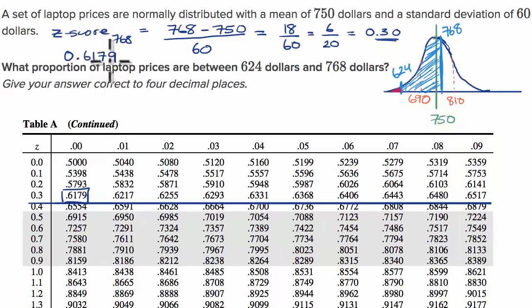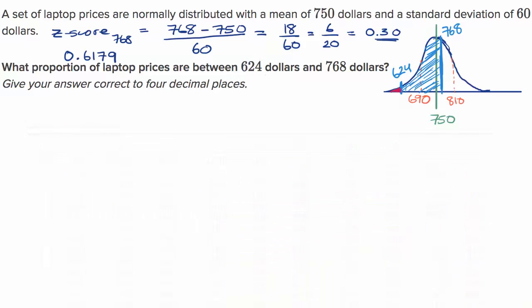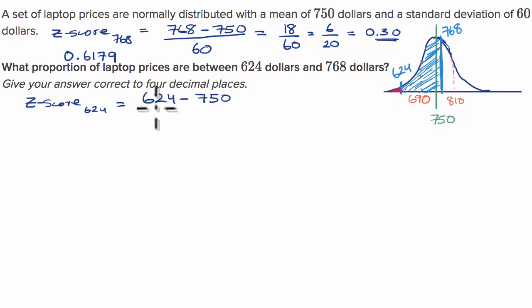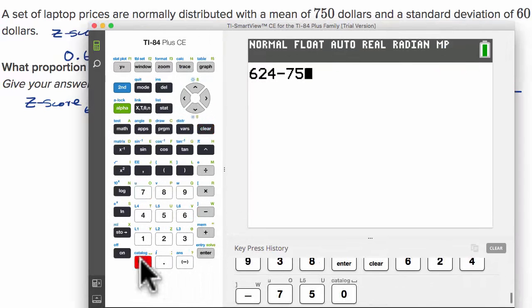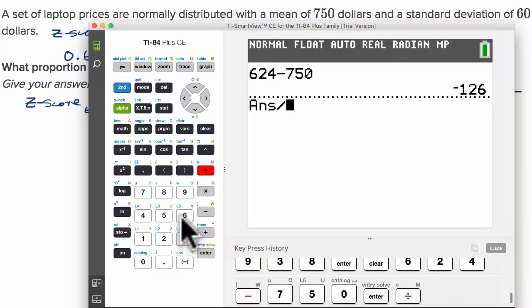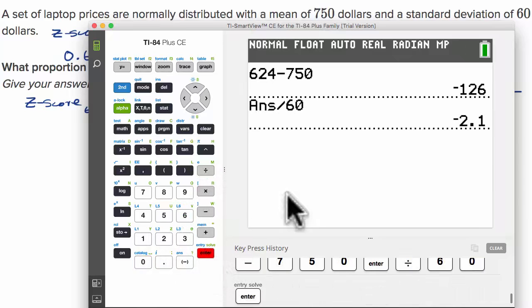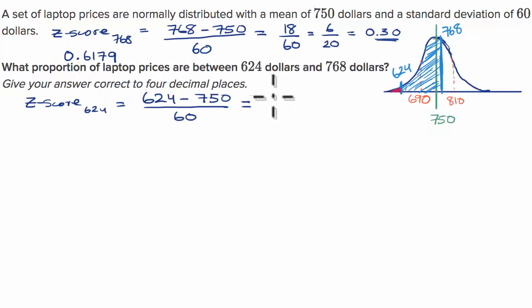Now let's find the proportion below $624. The z-score for 624 is 624 minus 750, all over 60. Using a calculator: 624 minus 750 divided by 60 equals negative 2.1. So the lower bound is 2.1 standard deviations below the mean, giving a z-score of negative 2.1.